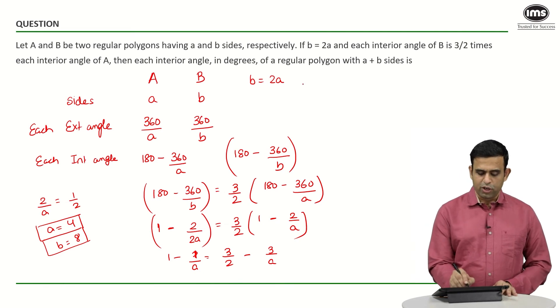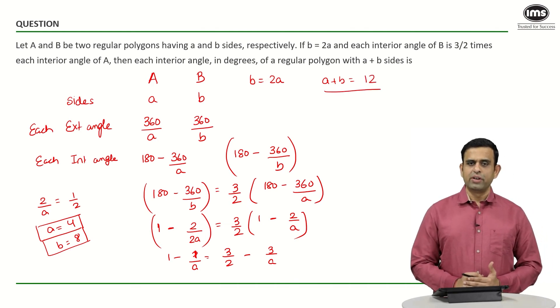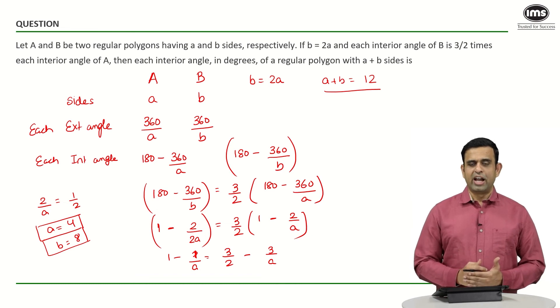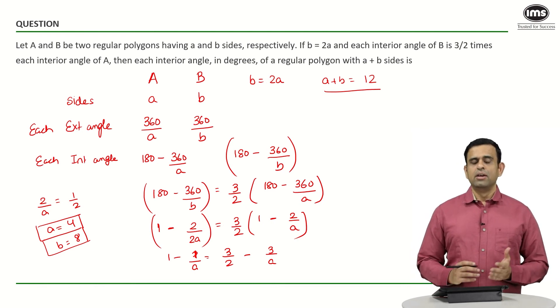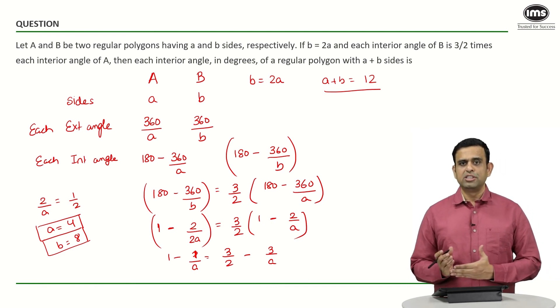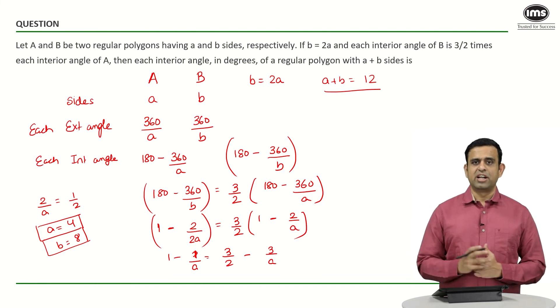So small a plus small b is 4 plus 8, which gives 12. Please note, you should not mark 12 as your answer because the question is not asking for the value of small a plus small b. They are asking for the interior angle in a polygon with 12 sides.